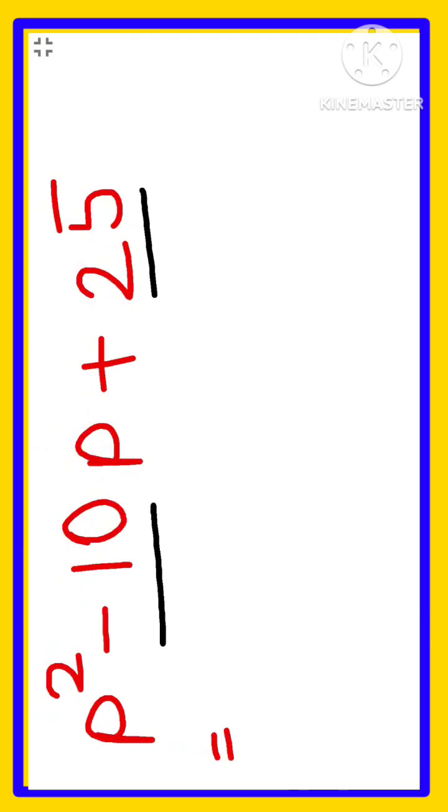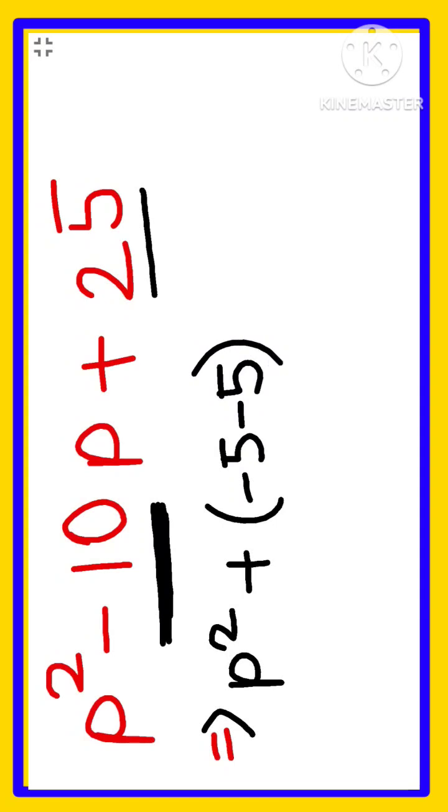Here p squared we'll write as it is. We'll take plus common and you need to make minus 10, so two numbers if you add you will get minus 10, and if you multiply those two numbers we are going to get 25. Can we make those numbers? Yes, we can take it as minus 5 and minus 5. If we add minus 5 and minus 5 we are getting minus 10.